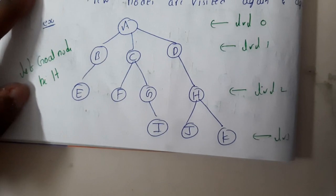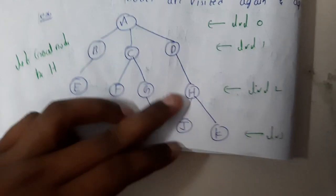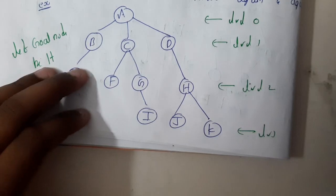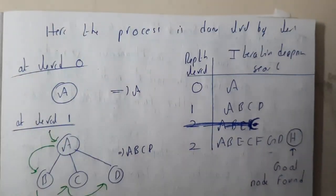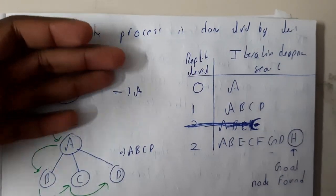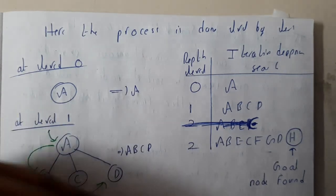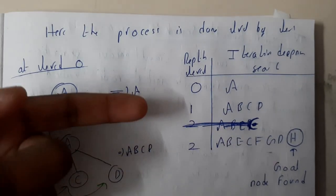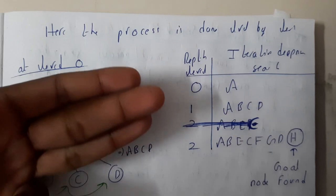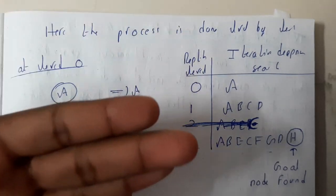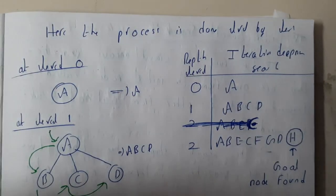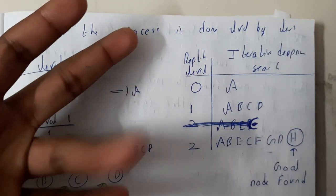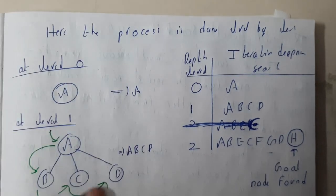Let us assume H is our goal node. We need to mark the levels: level 0, level 1, level 2, level 3. The solution works level by level — initially only level 0, then adding level 1, level 2, level 3, level 4, and so on. For each level added, we perform a Depth First Search. This is why we break the whole graph into parts — it is a combination of breadth and depth.